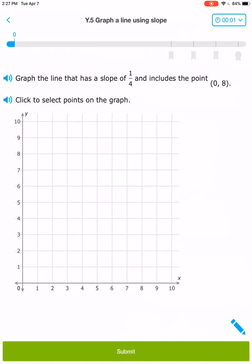As I click on this IXL objective, the directions say to graph the line that has a slope of 1/4 and includes the point (0, 8). Click to select the points on the graph.